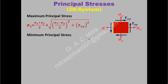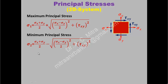The minimum principal stress is normally denoted by sigma 2. Remember sigma 1 and sigma 2 are required in the formula of theories of failure. Sigma 2 is sigma x plus sigma y divided by 2 minus under root of (sigma x minus sigma y)/2 whole square plus tau xy square. Just check these two formulas carefully — the first term and the under-root term are the same. The only difference is that for sigma 1 it is positive, and for sigma 2 it is negative.